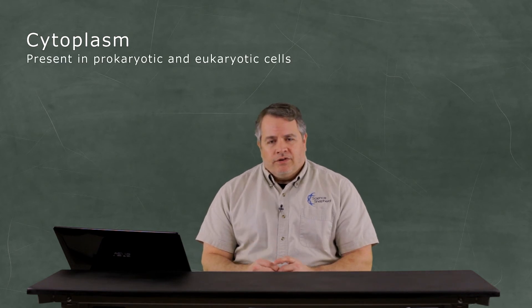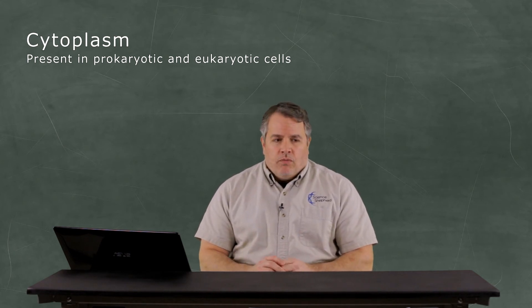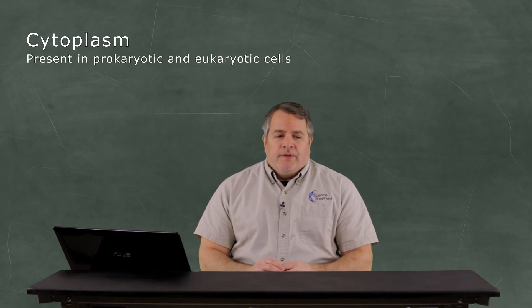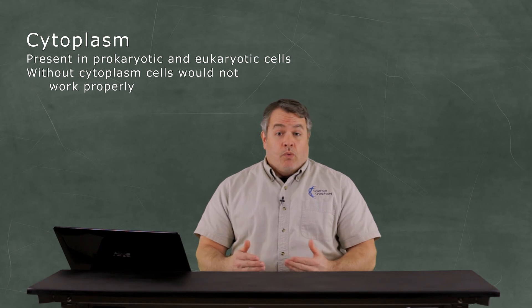And the first thing that's on the inside of the cell, and these are a structure that both prokaryotic and eukaryotic cells have, and that's the cytoplasm. And the cytoplasm, I think, is often kind of forgotten about how important it is and why it's important. Because really, without the cytoplasm, we wouldn't work right.